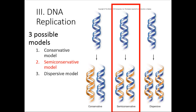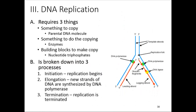When DNA is replicated, there were three possible models. The conservative model proposed that the new strand consists of two completely new strands while the old strand is kept intact. The semi-conservative model proposed one old strand and one new strand in each resulting molecule. The dispersive model proposed a mixture of old and new in chunks. Research showed that the semi-conservative model was correct.